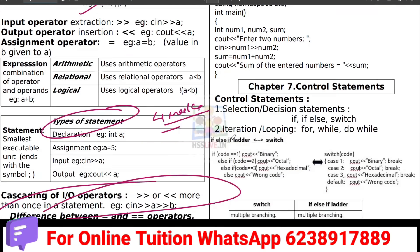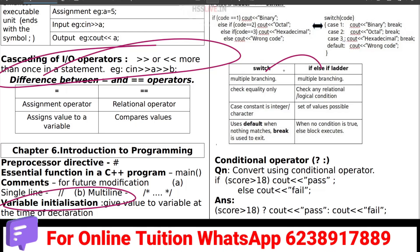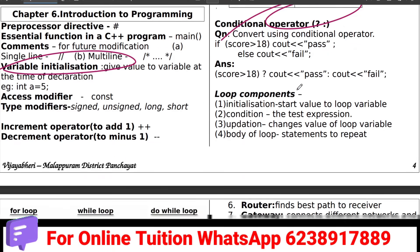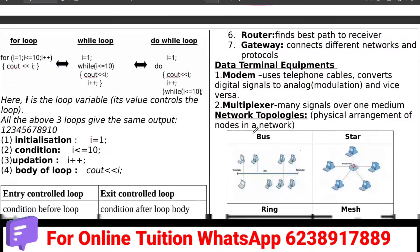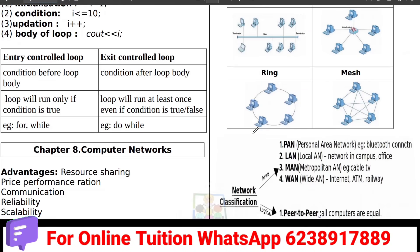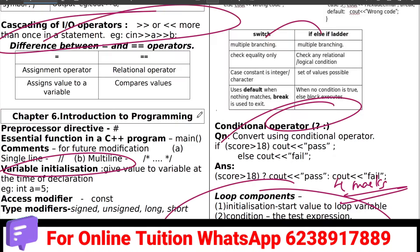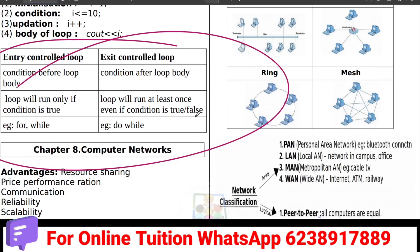Then Chapter 7: control statements. Different types of control statements, switch and else-if ladder, conditional operator. We will learn loop components: initialization, condition, updation, loop body. We will learn the difference between entry-controlled and exit-controlled loops, and the difference between control statements with three questions. Please go to the video, like and subscribe. Thank you, see you.